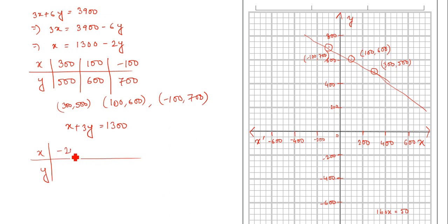First one is minus 200 and it will be 500. This is 100 and 400. That is minus 500 and 600.